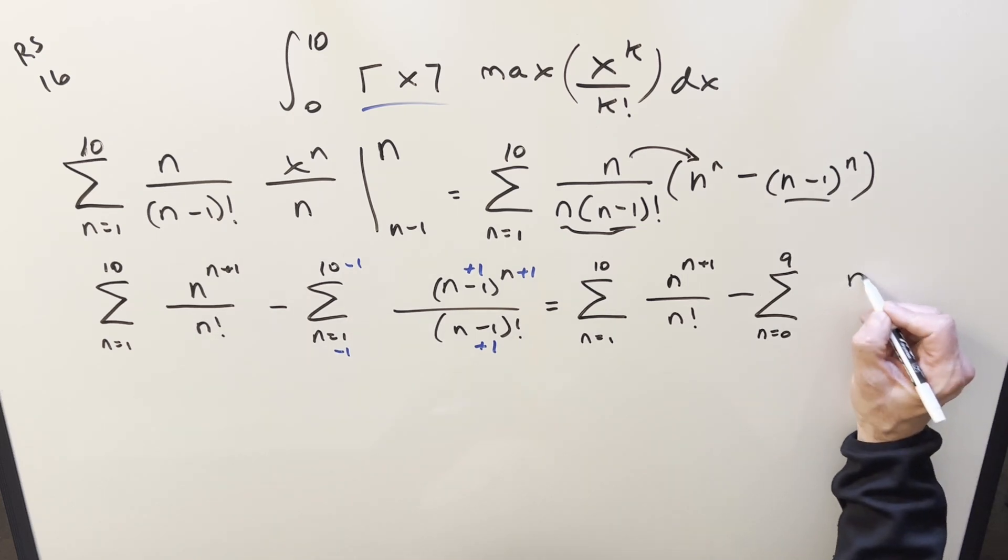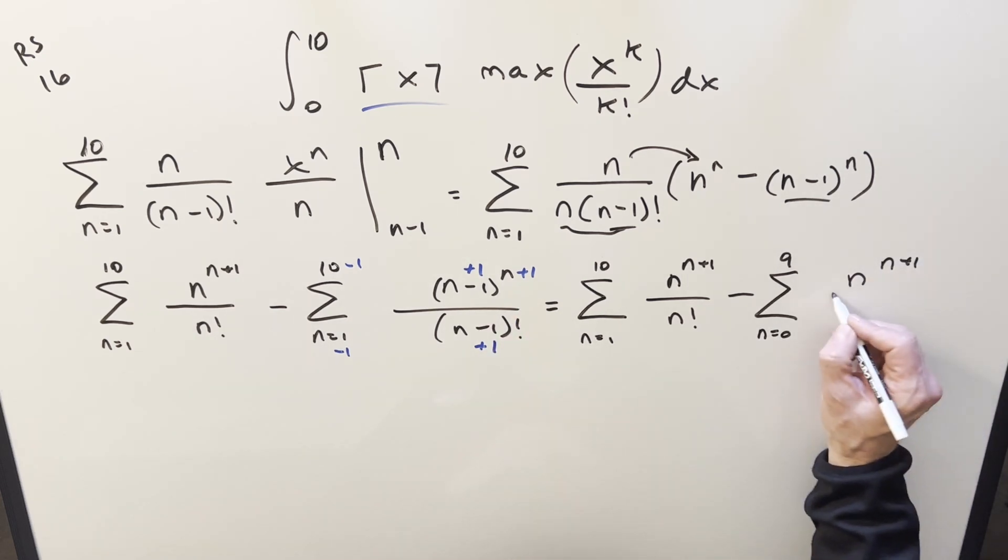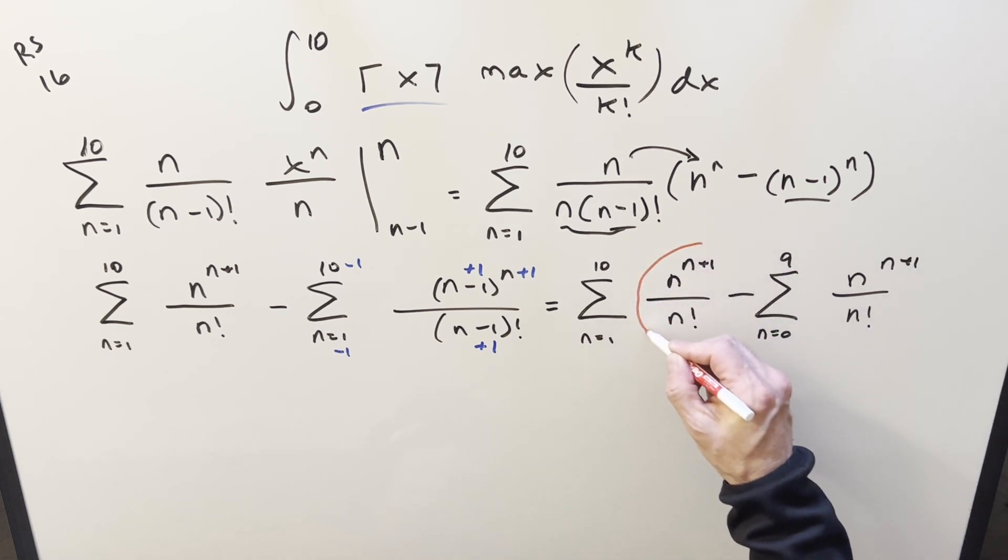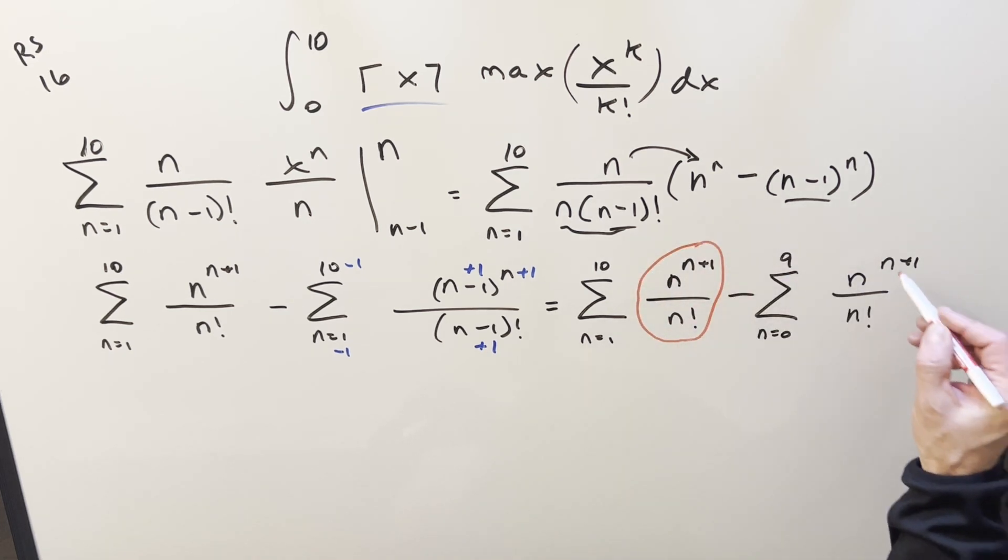Then with all the plus 1's, we just know we have an n, but we've got n to the n plus 1 over n factorial. And this right here, this is exactly what I wanted because now this matches this. This is going to allow us to put these two together.